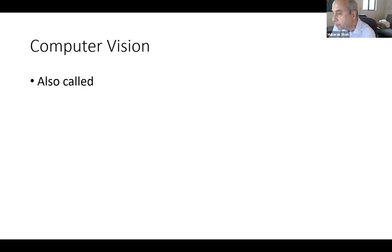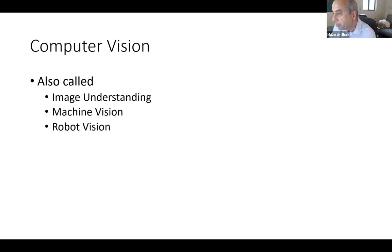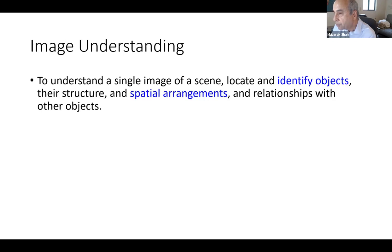It deals with recovery and use of information about objects in a scene. Computer vision is also called image understanding, machine vision, robot vision, image analysis, video understanding, and so on. Image understanding means that we are given an image, we want to identify what is in an image, identify objects, their structure, spatial arrangement, and relationship with objects by a computer program.